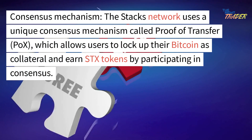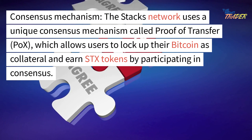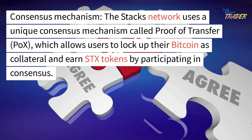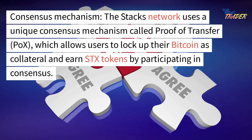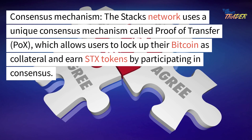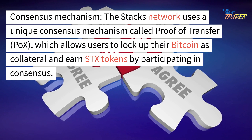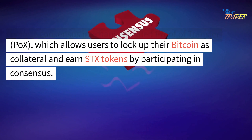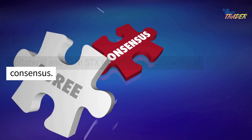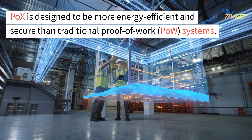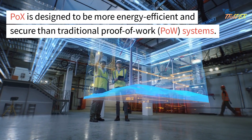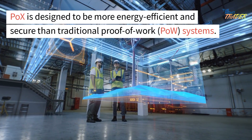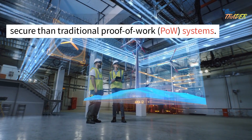The Stacks network uses a unique consensus mechanism called Proof of Transfer, POX, which allows users to lock up their Bitcoin as collateral and earn STX tokens by participating in consensus. POX is designed to be more energy-efficient and secure than traditional Proof of Work, POW, systems.